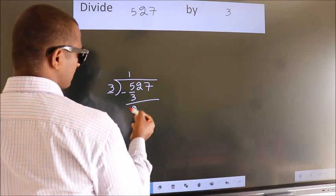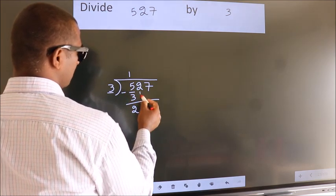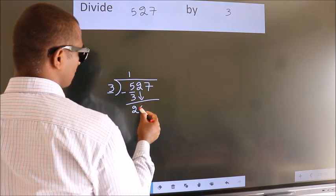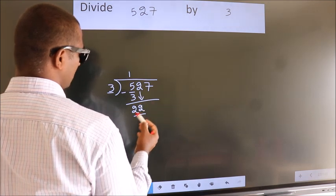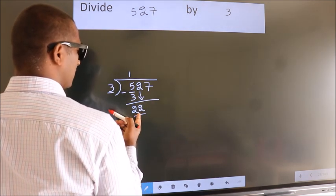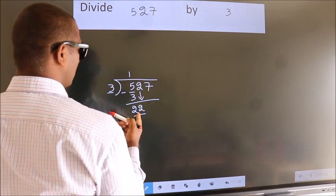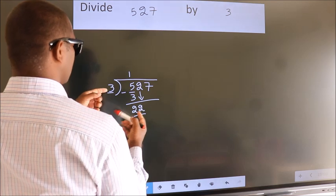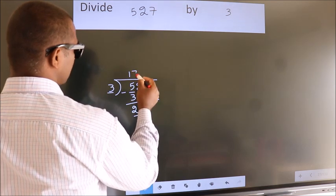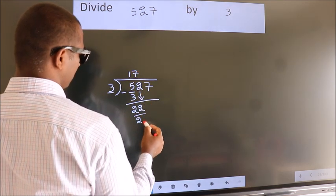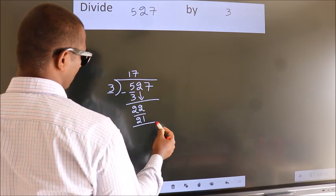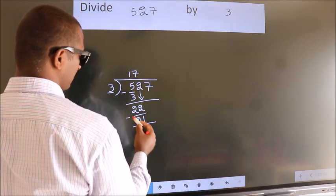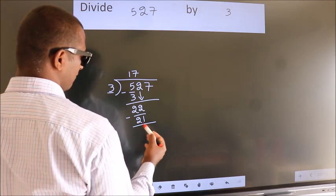After this, bring down the beside number. So 2 down, so 22. A number close to 22 in the 3 table is 3 7s = 21. Now we subtract. We get 1.